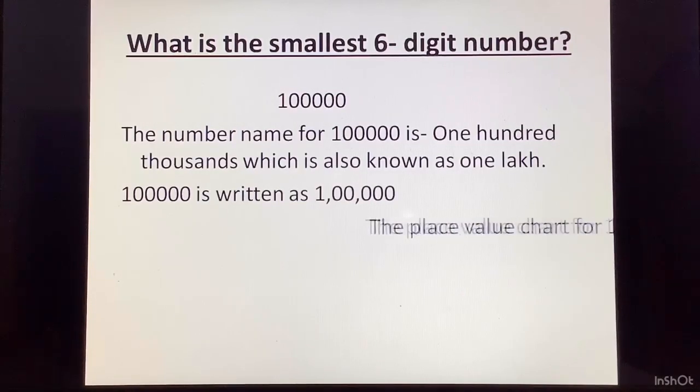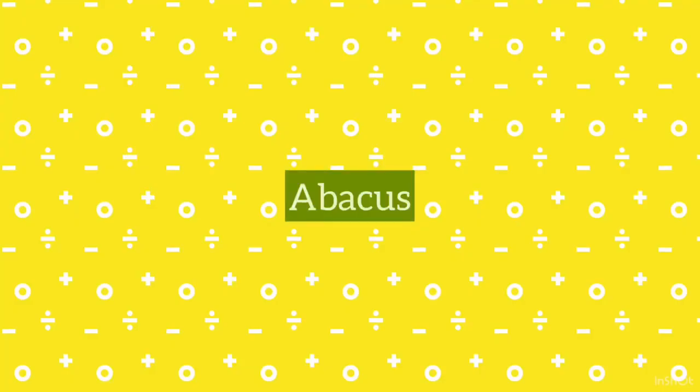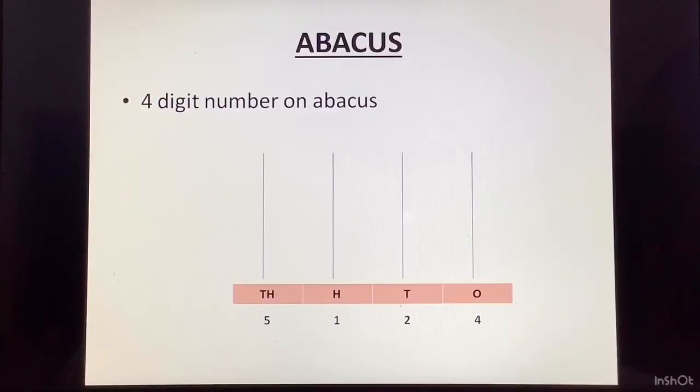So, this will be clarified further. Here, we have ones, tens, hundreds. That is one period. Then, that is why we have a comma after 3. Then, we have thousands, ten thousands. That is the second period. So, comma after 2. Then, we have lakh. There, we enter into the third period.